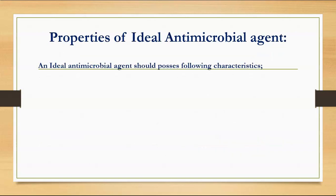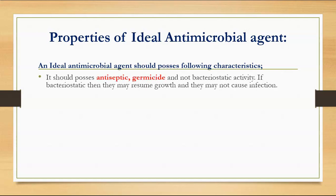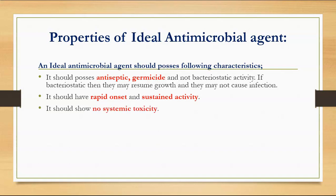There are certain ideal properties of an antimicrobial agent. First, it should possess antiseptic germicidal and not bacteriostatic activity — if bacteriostatic, microorganisms may resume growth and cause infection. Second, it should have rapid onset and sustained activity. Third, it should show no systemic toxicity. Fourth, it should have broad spectrum activity.